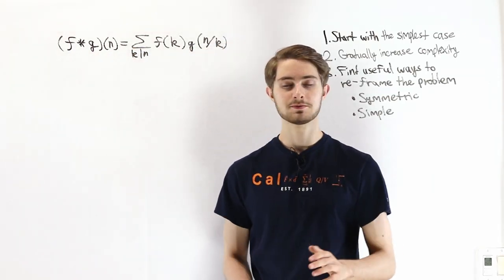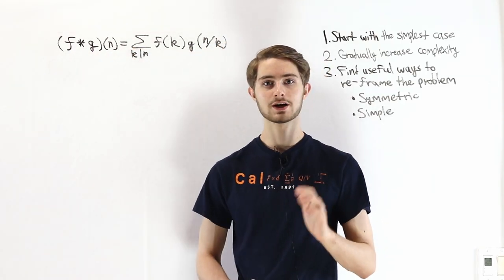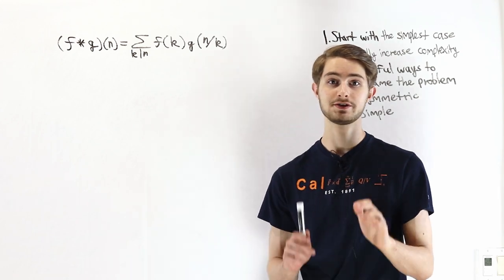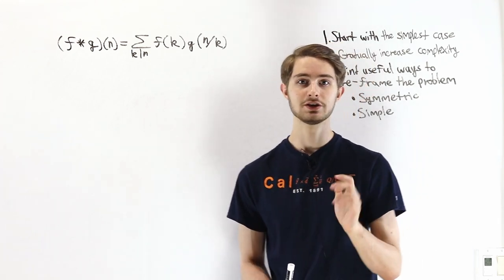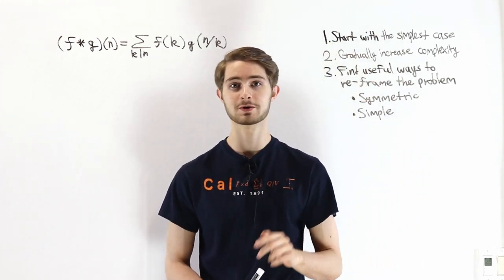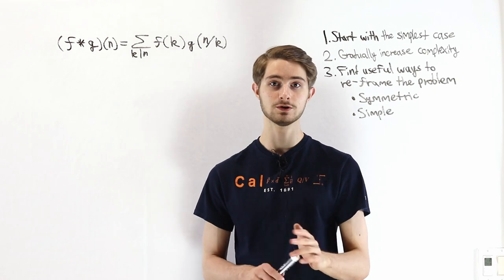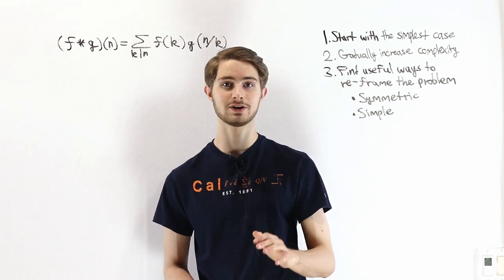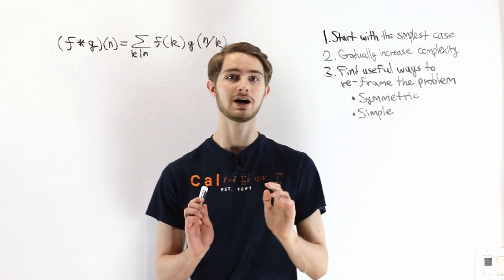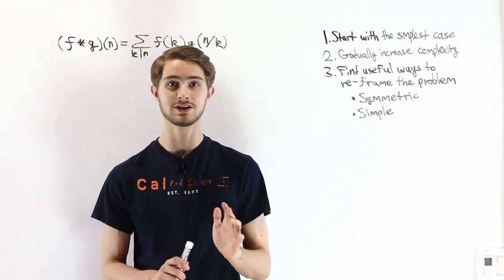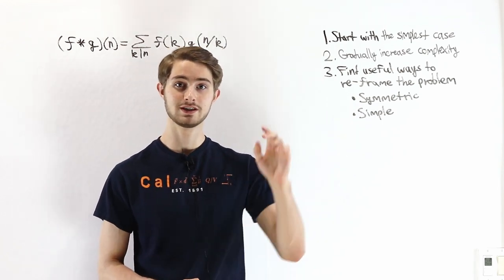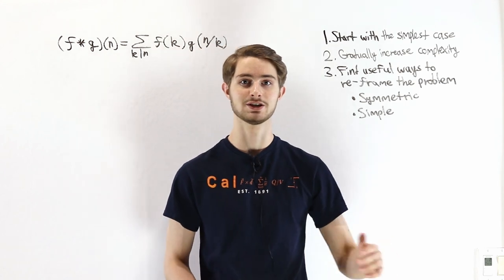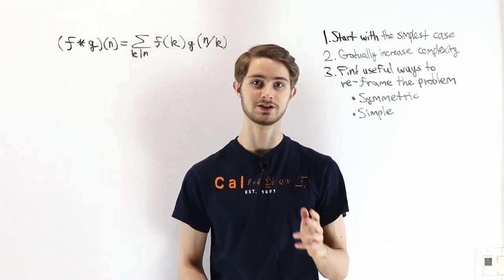We are going to do a few problems from the Caltech Harvey Mudd math competition that have to do with something called the Dirichlet Convolution. This video is the first part of a collaboration with Prof Omar, who is a professor at Harvey Mudd College and also has his own YouTube channel. After you finish this video, there's a link to his video in the description so you can watch the continuation of this series of problems.